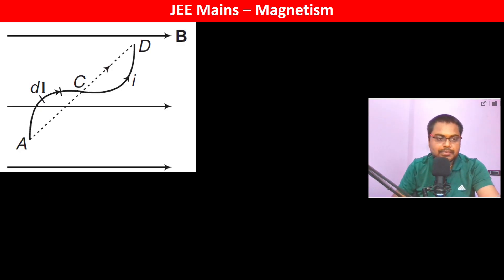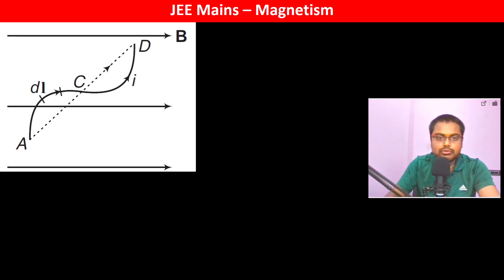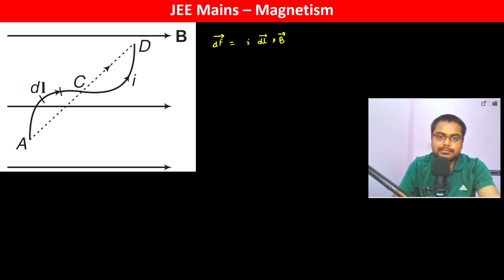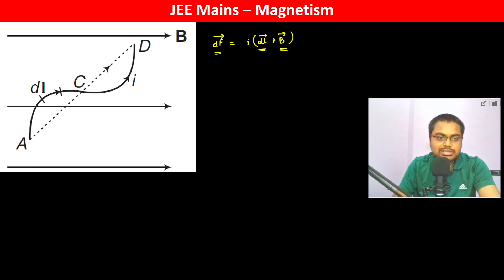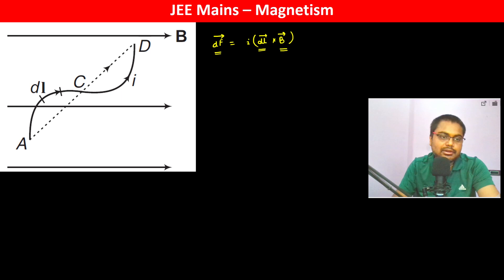The force on a current-carrying wire is given as dF = I dl × B, where dl is the elemental length and B is the magnetic field, and dF is the force on the wire. Since dl is not in one direction throughout, we have to integrate it.